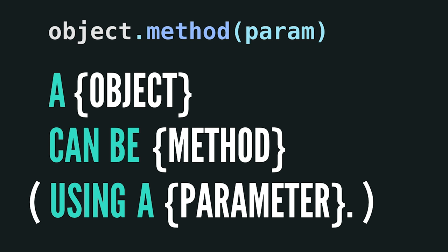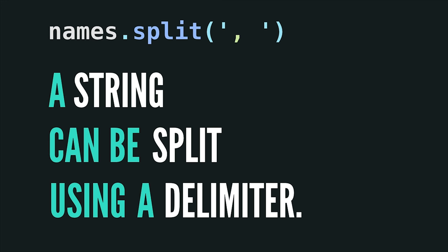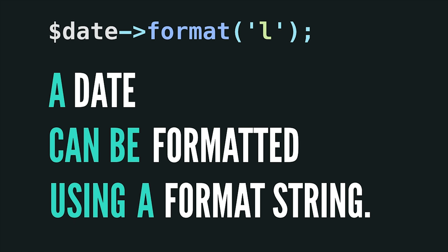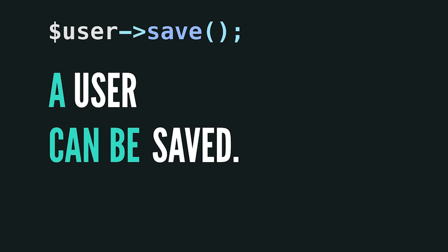Let's run our previous examples through this format: 'a string can be split using a delimiter' — makes sense. 'An array can be reversed' — perfect. 'A date can be formatted using a date string' — perfect. And maybe a little bit more controversially: 'a user can be saved.' How many times have you heard that argument about active record versus data mapper, where everybody says a user can't save itself, it's not a database saver, you need something else to do the saving? But that's a straw man argument because that's not what methods are. Methods are things you can do with an object. If an eloquent model represents a database record, then the only things I really expect to do with it are update it, save it, delete it. If those were the only methods it had, that would make perfect sense.